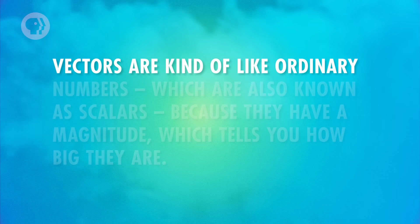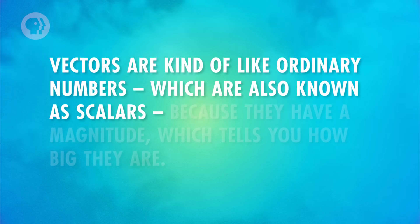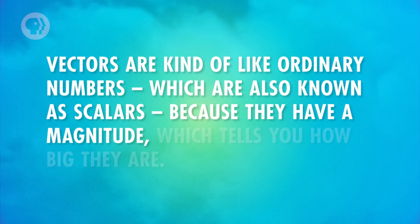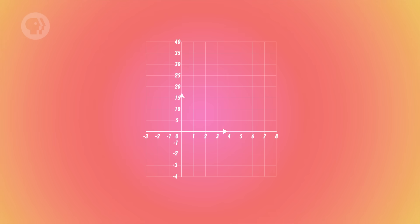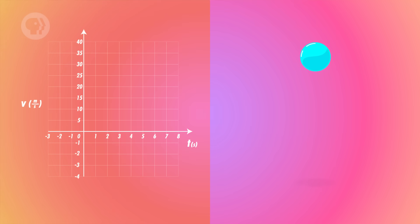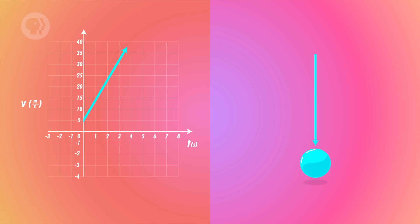Vectors are kind of like ordinary numbers, which are also known as scalars, because they have a magnitude which tells you how big they are. But vectors have another characteristic too — direction. Previously, we might have said that a ball's velocity was 5 meters per second. And assuming we'd pick downward to be the positive direction, we'd know that the ball was falling down, since its velocity was positive. In other words, we were taking direction into account, but we could only describe that direction using a positive or a negative, so we were limited to two directions along one axis.